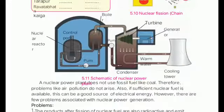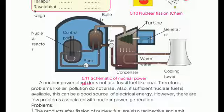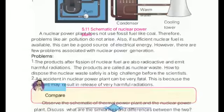This is the schematic diagram of a nuclear energy generation plant. The nuclear power plant does not use fossil fuel like coal. Therefore, problems like air pollution do not arise. And also, if sufficient nuclear fuel is available, this can be a good source of electrical energy.